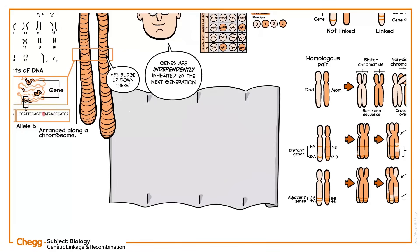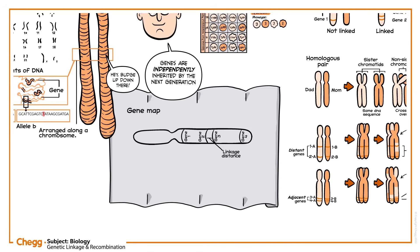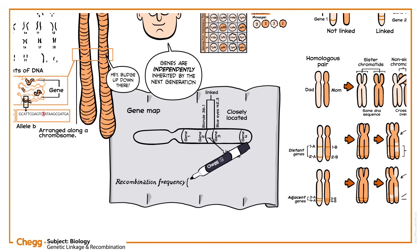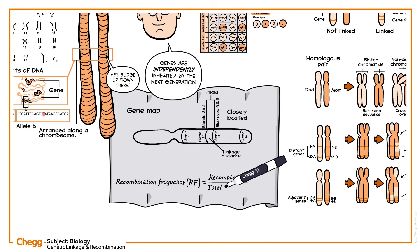Based on these concepts, the distance between genes and their recombination frequency can be determined along with a gene map. When two genes have traits that are often inherited together, we can say the two genes are closely located, and vice versa. The recombination frequency can be determined using the formula: RF equals recombinants divided by total offspring, times 100%.